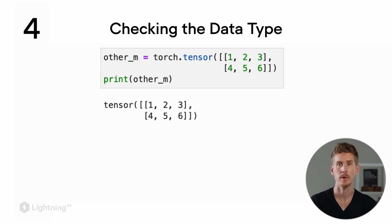For example, here is a matrix with integers. In this case, when we use .dtype, it will show us the integer precision.